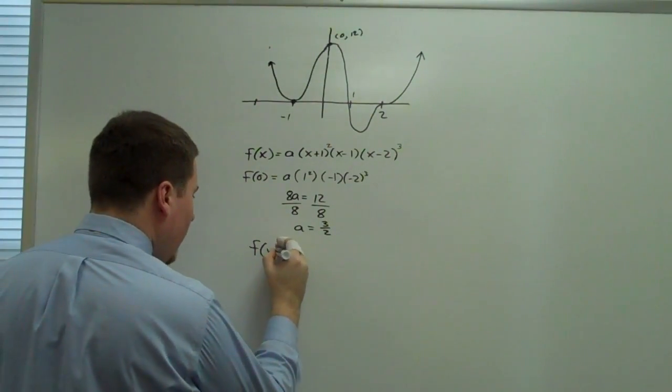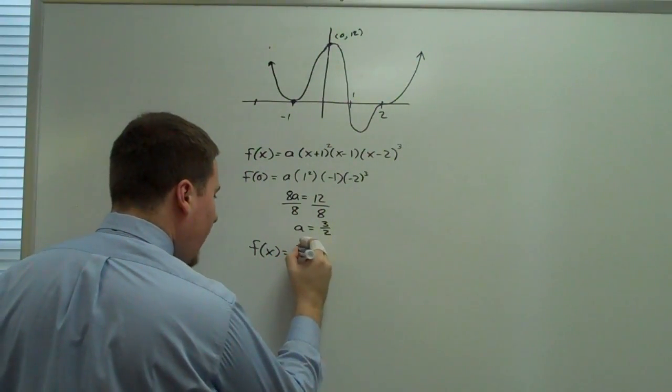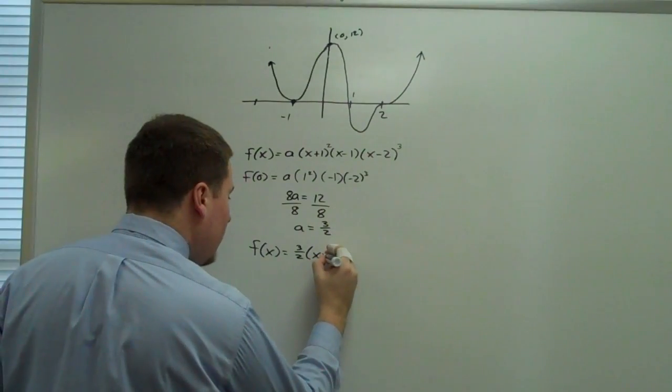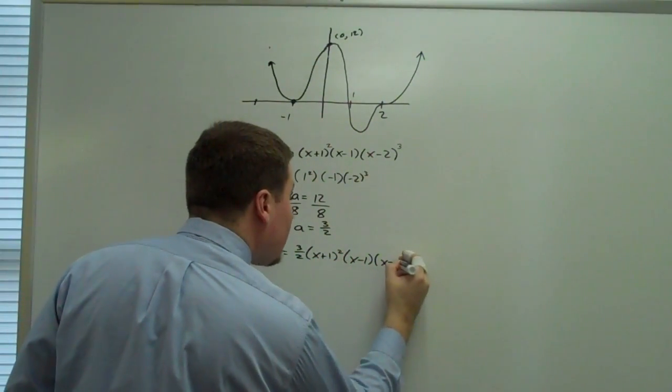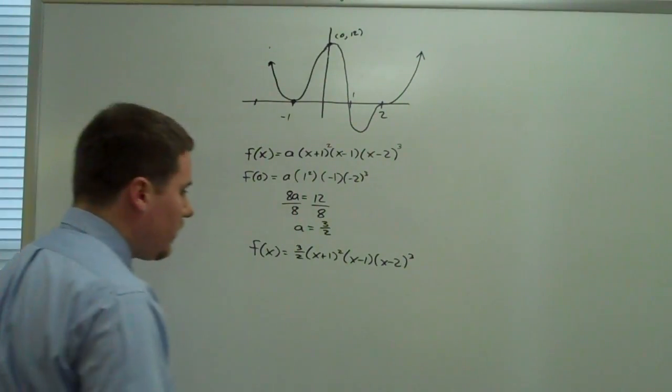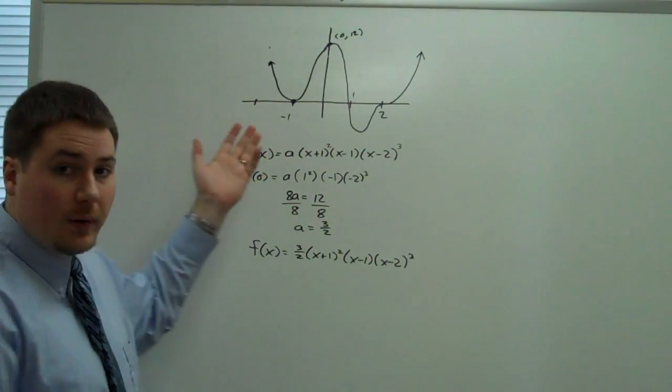So f of x is going to equal 3 halves, x plus 1 squared, x minus 1, x minus 2 cubed. And that is the polynomial that we have pictured here.